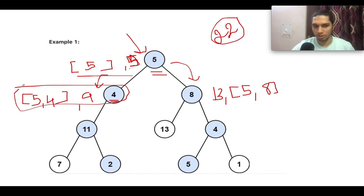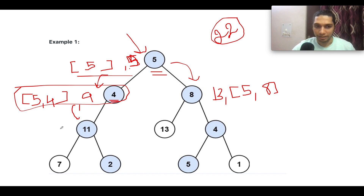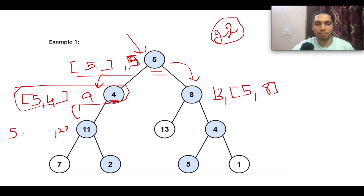Continuing the iteration, taking node 4's left child: 9 plus 11 gives 20, which is still not equal to the target sum of 22. The running list gets updated to [5, 4, 9].